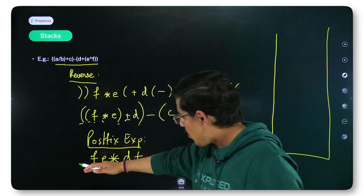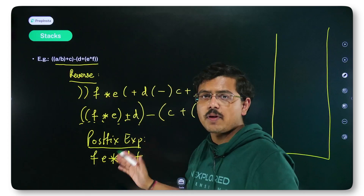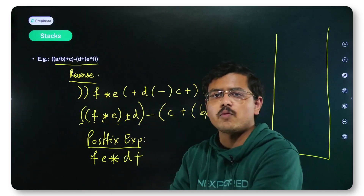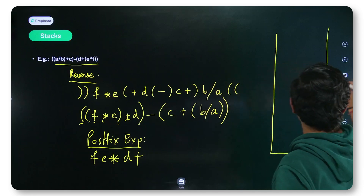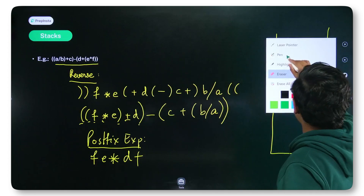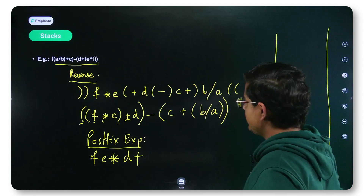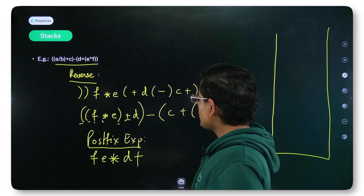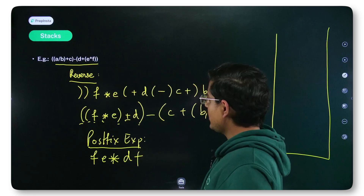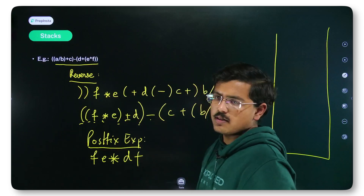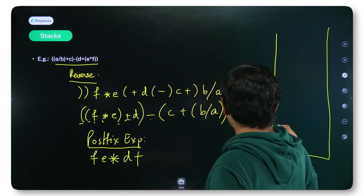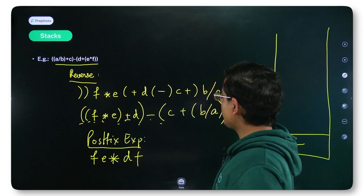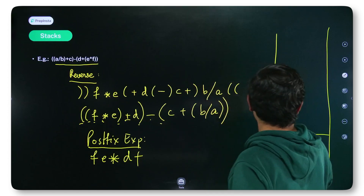Once I have obtained this postfix expression, I will just reverse it and that would be our prefix expression. Now I encounter minus — there is nothing in the stack, so I can push it. Then opening bracket is pushed.